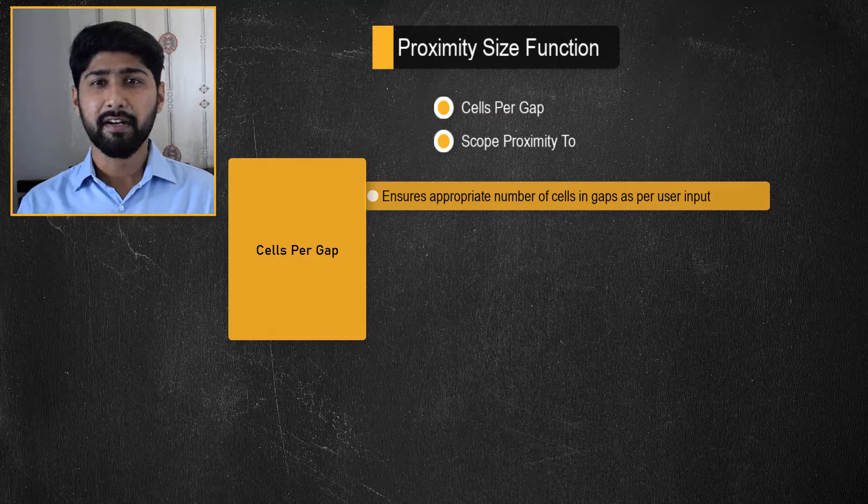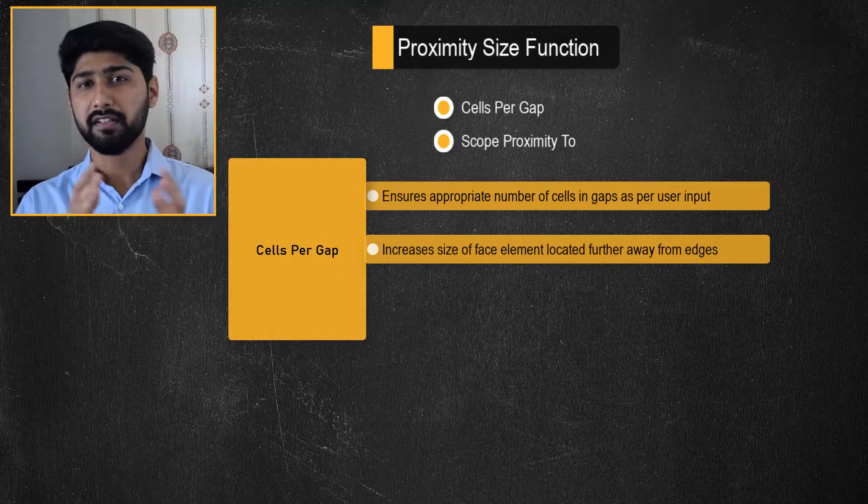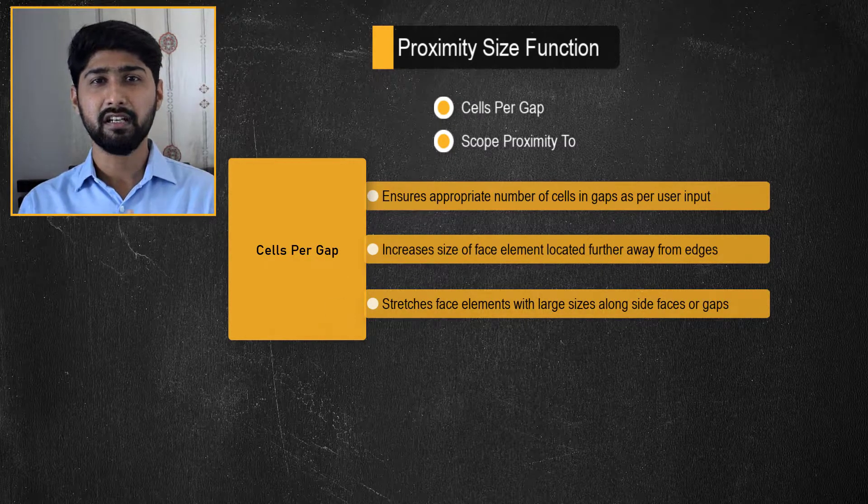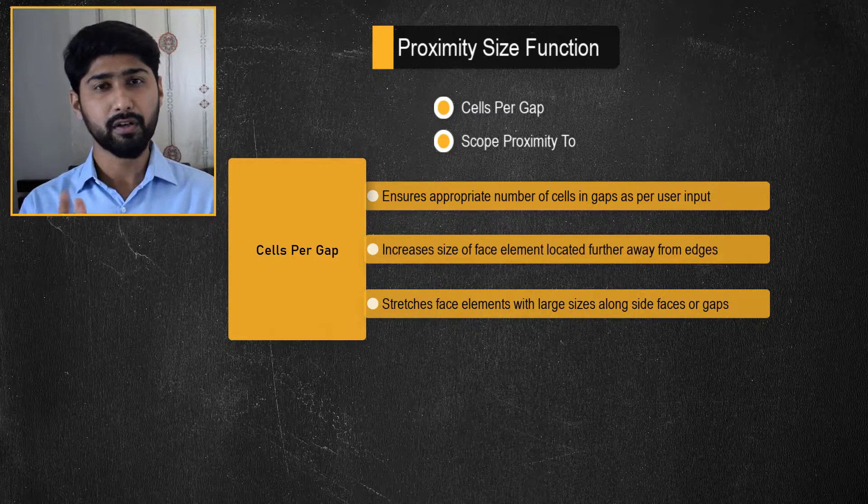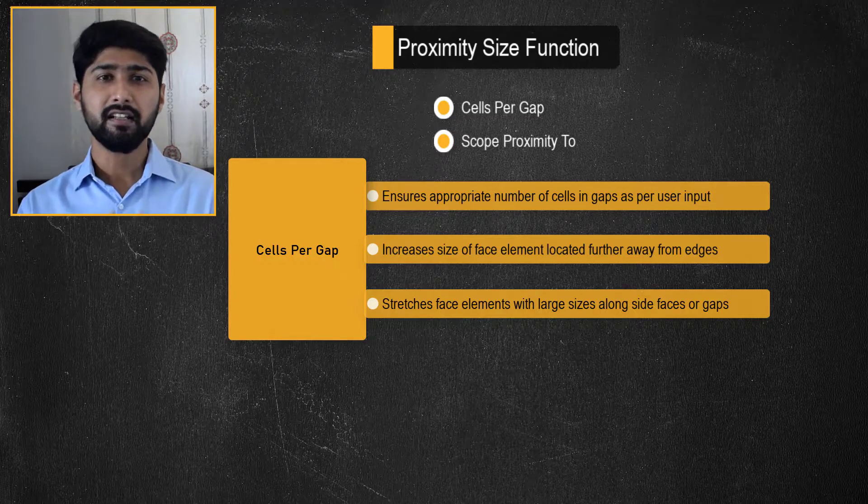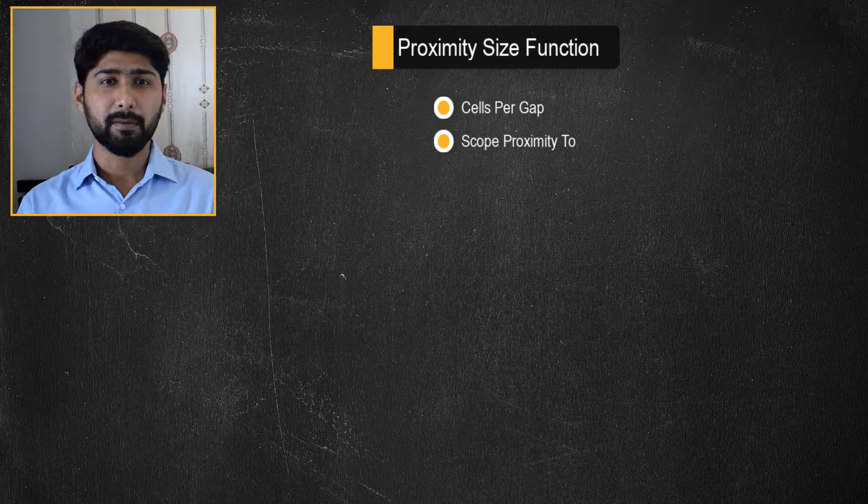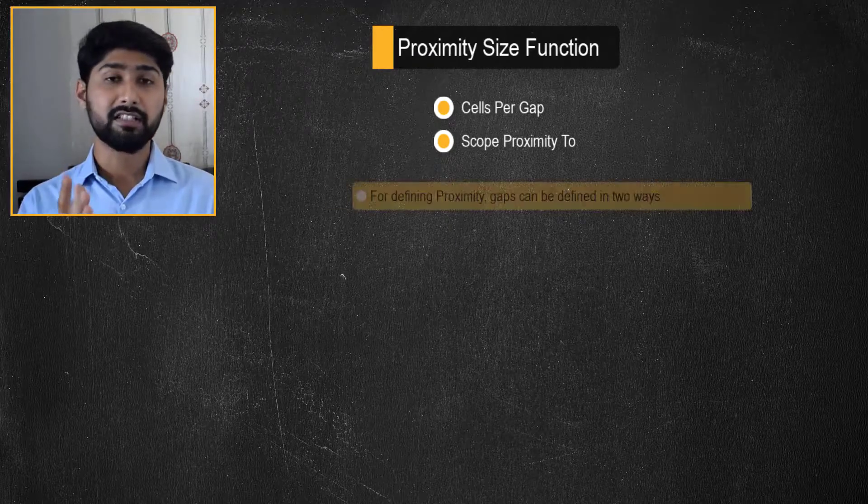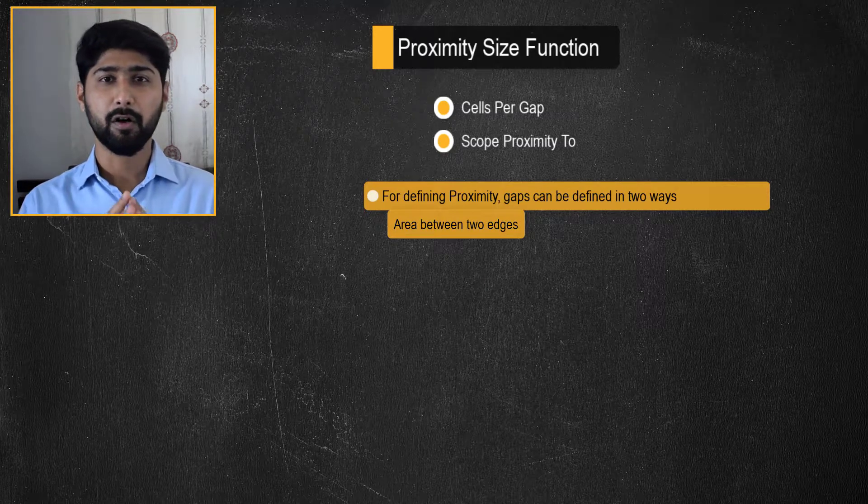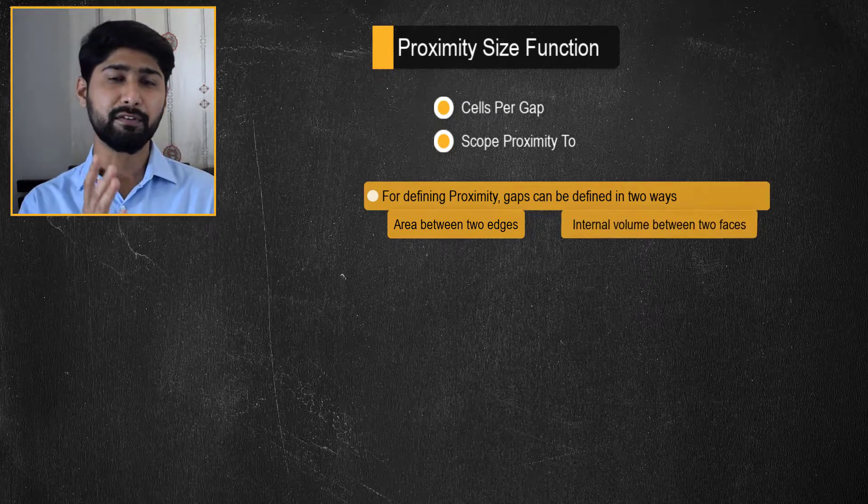This has the effect of increasing the size of face elements located further away from edges and stretching face elements with large sizes along side faces or gaps, thereby reducing the overall face count and ultimately the cell count. A gap for the purpose of defining proximity is defined in two ways: the area between two opposing boundary edges of a face, and the internal volume or region between two faces.